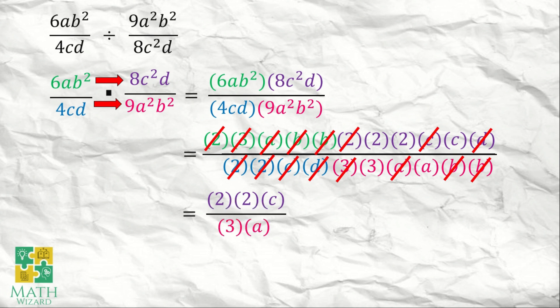So we write the remaining terms. These are 2 times 2 times c at the numerator, and in the denominator we have 3 times a. Simplifying this: 2 times 2 times c becomes 4c, and 3 times a becomes 3a. Therefore, the final answer is 4c over 3a.